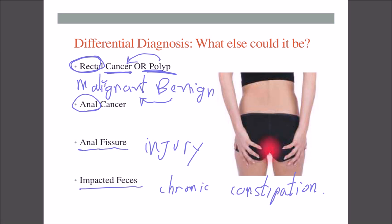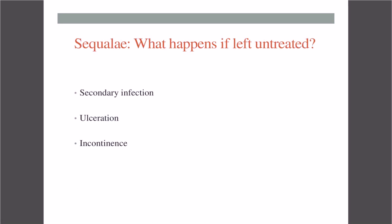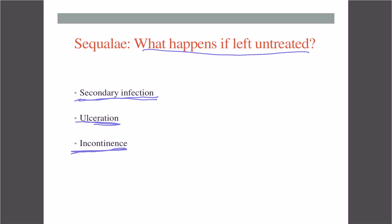As for sequelae — what happens if hemorrhoids are untreated — these are the risks: you can have an infection, leading to more inflammation and problems; ulceration, meaning they can break and bleed more; and incontinence, meaning bowel movements may become very infrequent and difficult to control.